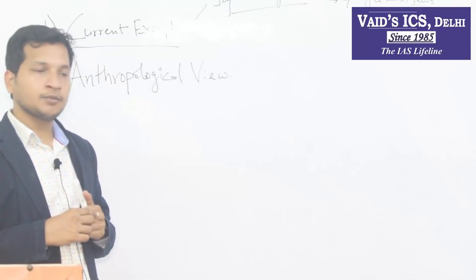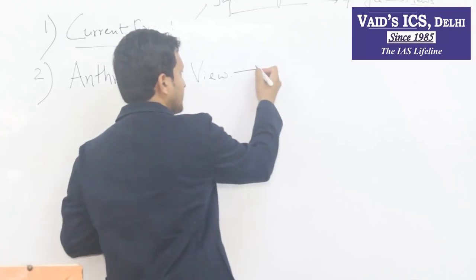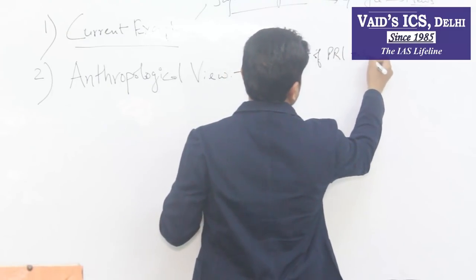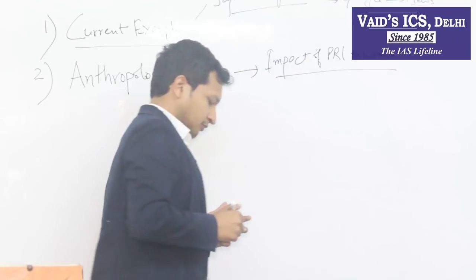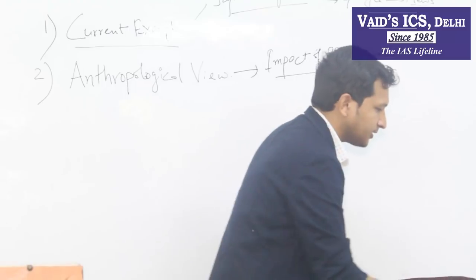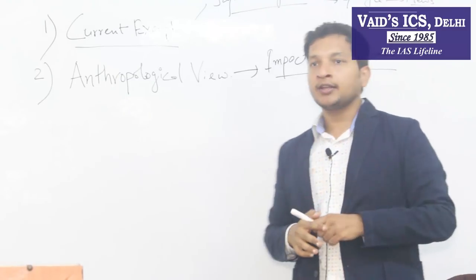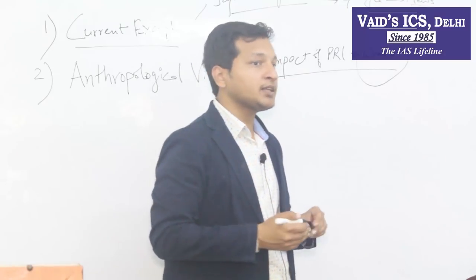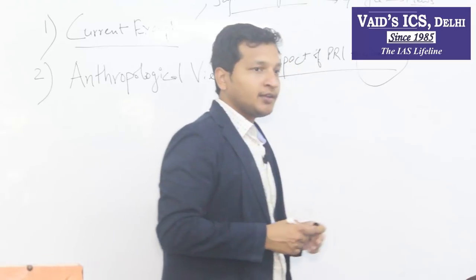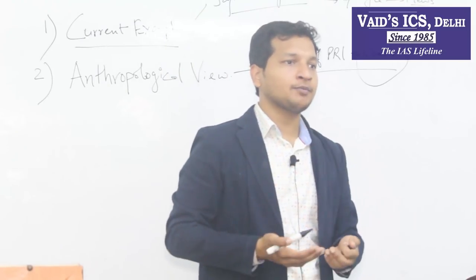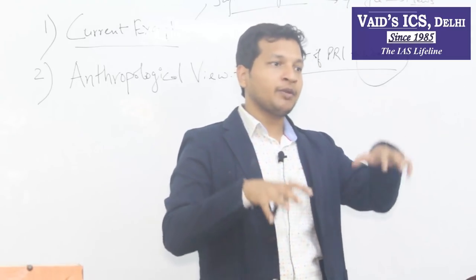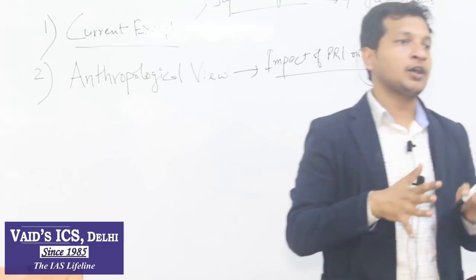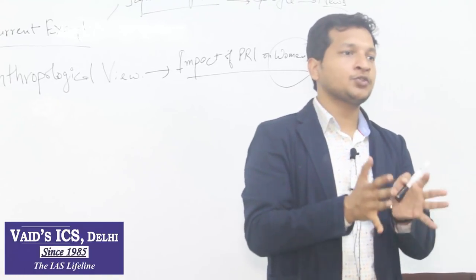For example, the question: impact of Panchayati Raj on women. What we study in anthropology is the social structure — the kind of social structure that we carry. Initially in Indian society, women were not considered equal, especially in the political sphere. With PRI, they were given an equal platform through reservation so that they would be coming into the domains of the political sphere. That's how you need to show how it is leading to a change of social structure in society.